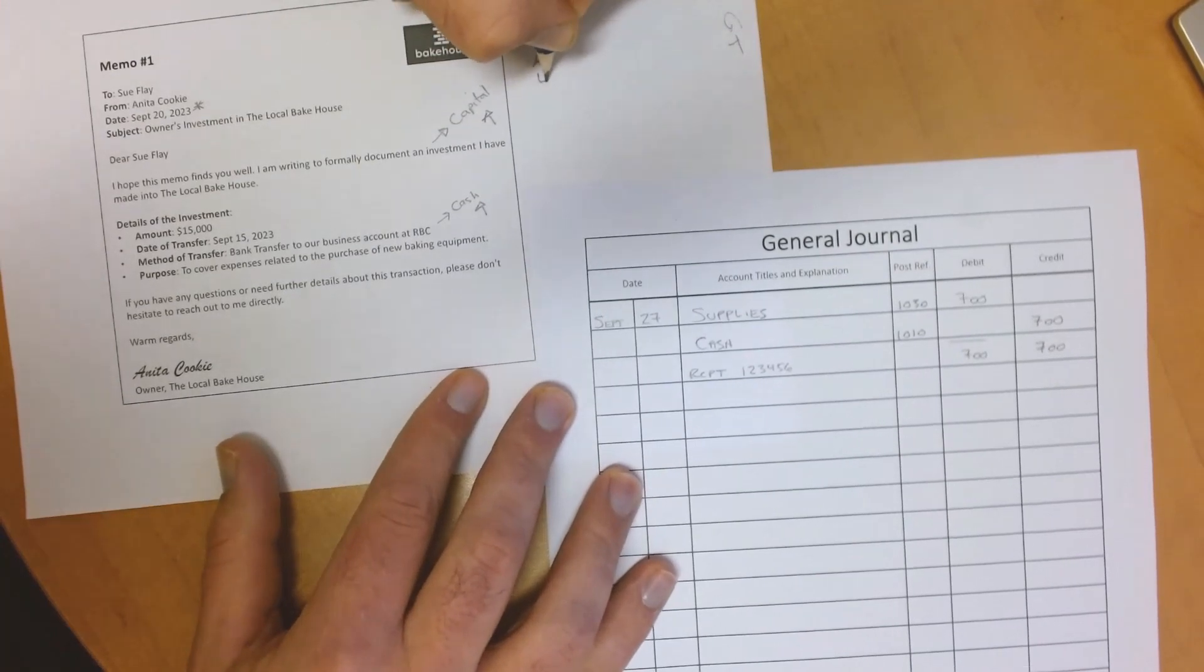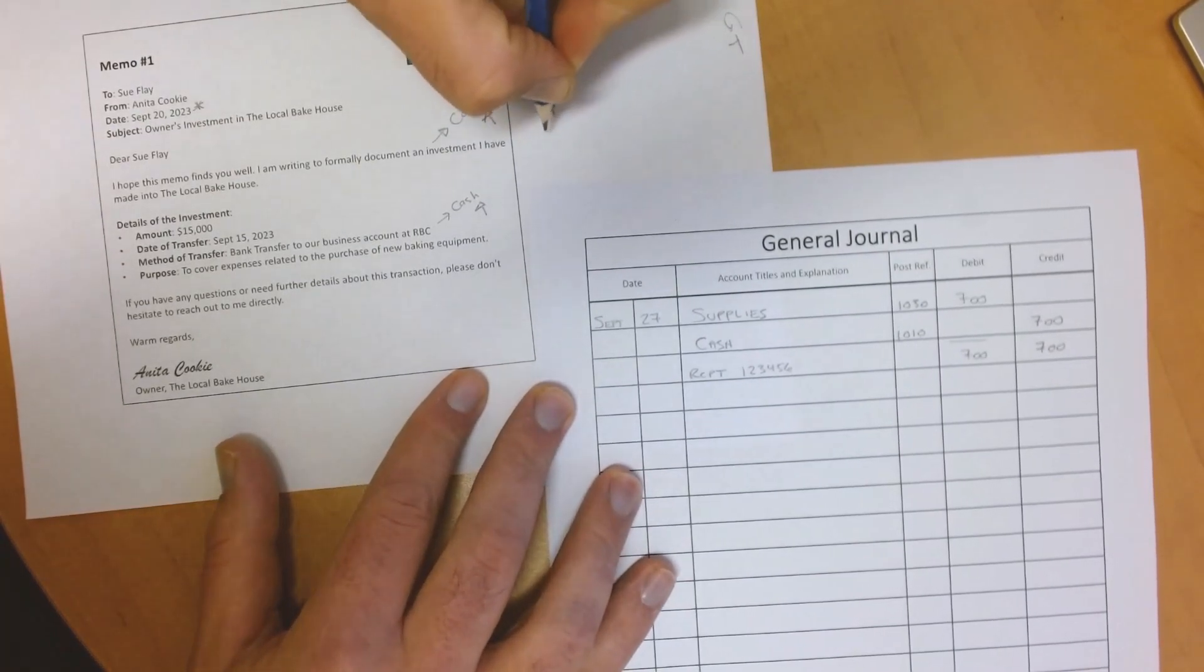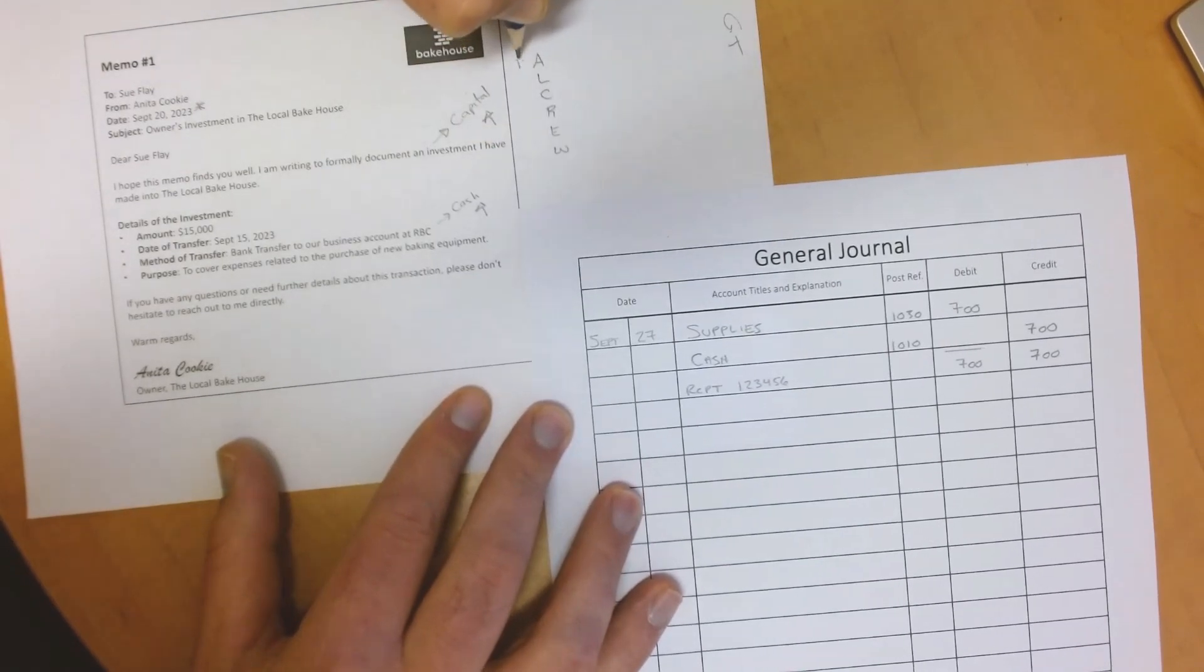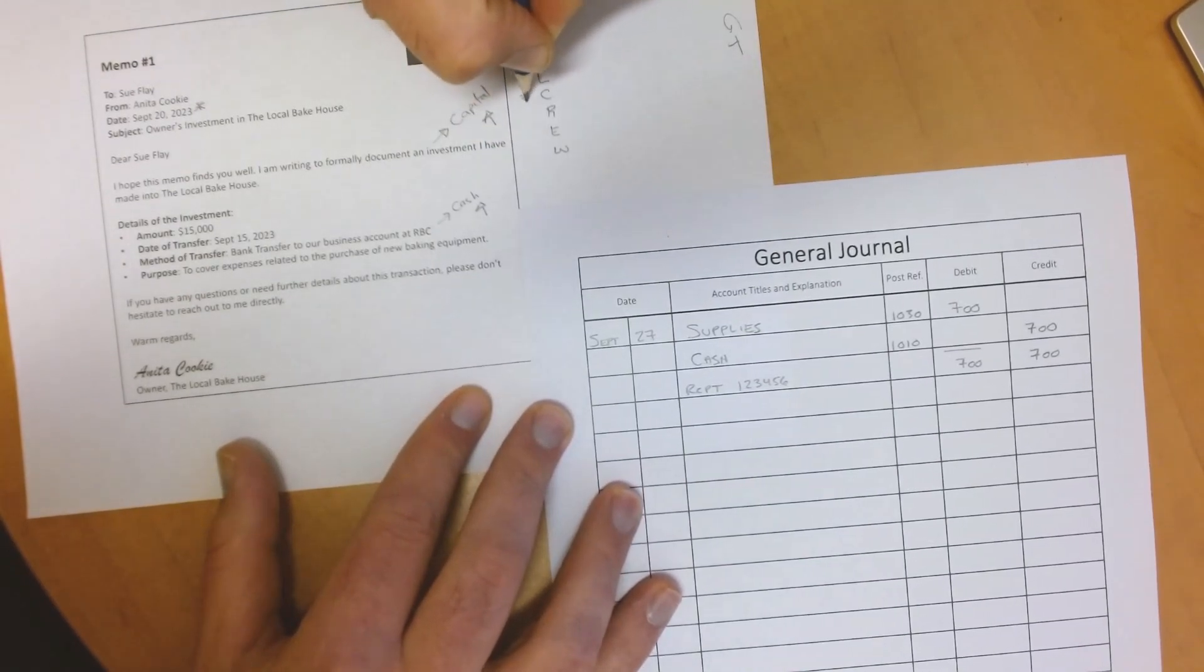Using our accounting equation, we should assign a category to each of the affected accounts. We know 1001 is an asset, and it has increased, so it will be debited.